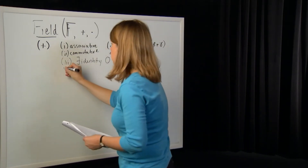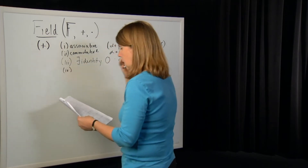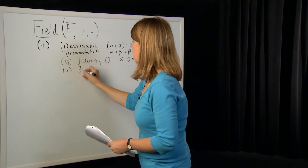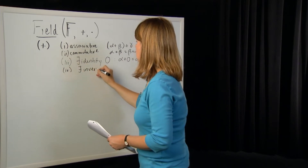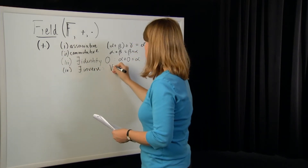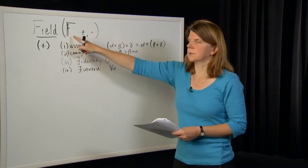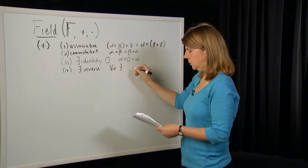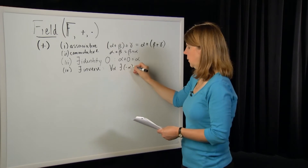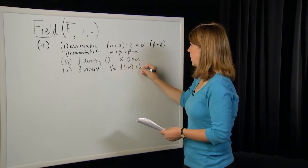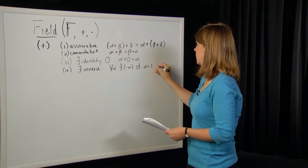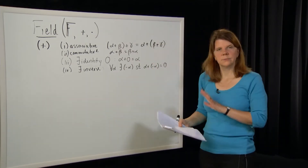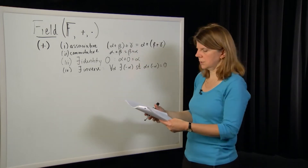And there exists an inverse. Once you've defined the identity, you can define an inverse. For all alpha elements in the field, there exists an inverse — which we'll call minus alpha — such that alpha plus this inverse gives us back the identity element. This is very standard; we're used to this in standard addition.